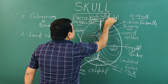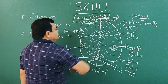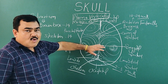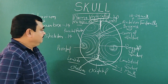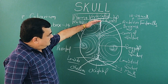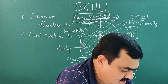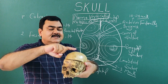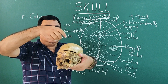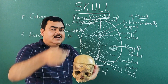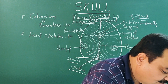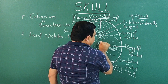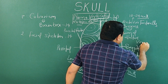This is the superior view of the skull, known as norma verticalis. The highest point of the skull in this view is known as the vertex.